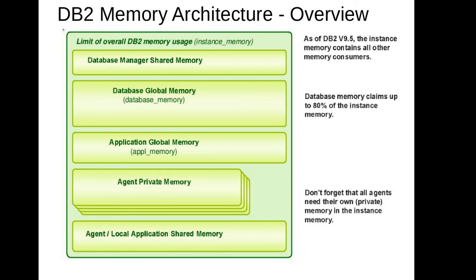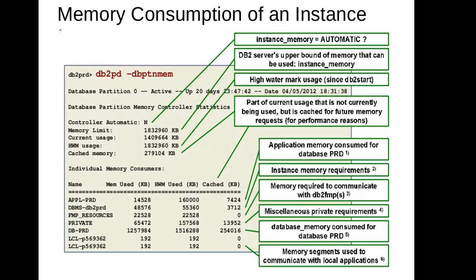Now, we know how to update the parameter using the DB2 UPDATE DB CFG — you set instance memory, calculate the memory into 4K page size, and update the parameter. But how do you look into the usage of this instance memory — how much is allocated to the database, how much to the application? For that we have a command called DB2PD with the -dbptn option. DB PTN means DB partition memory, and it's an easy way to look into the memory breakdown.